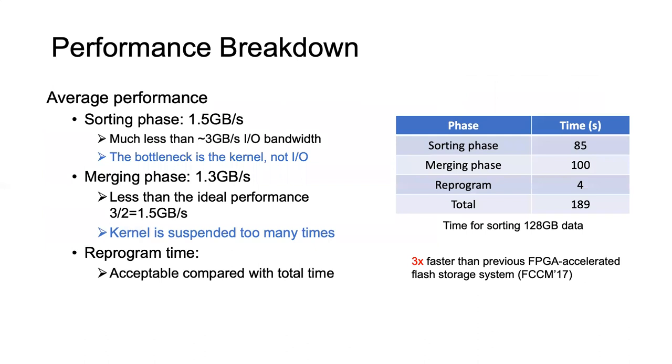Here we list the performance breakdown when using the described configuration to sort 128 gigabyte data. We can see the average performance in the sorting phase is only 1.5 gigabytes per second, which is much less than the I/O bandwidth. This proves that in the sorting phase the bottleneck is the kernel, not the I/O. In the merging phase, the actual performance is a bit less than the ideal performance. We believe it is because the kernel is suspended too many times. We also show that the reprogramming time is acceptable compared to the total time.